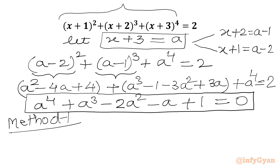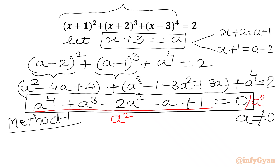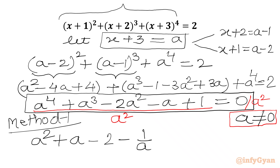In this method I will check at a equal to 0. If I plug in a equal to 0 it does not satisfy our equation, so a cannot be 0. So I can divide our equation both sides by a square. Dividing by a square, since a cannot be equal to 0. So I will write a power 4 over a square is a square, a cube over a square is a, minus 2, minus 1 over a, plus 1 over a square equal to 0.